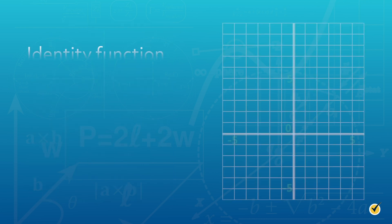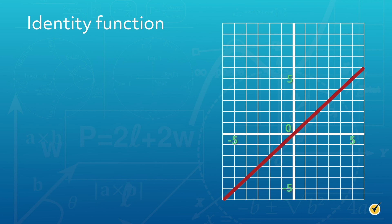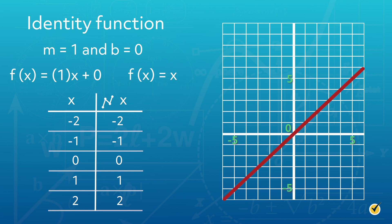The identity function is a linear function where m equals 1 and b equals 0. Consider the effect on the linear function f equals 1x plus 0, which simplifies to f equals x. This means that for any value of x that is substituted into the identity function, the y value is equivalent to the input x.